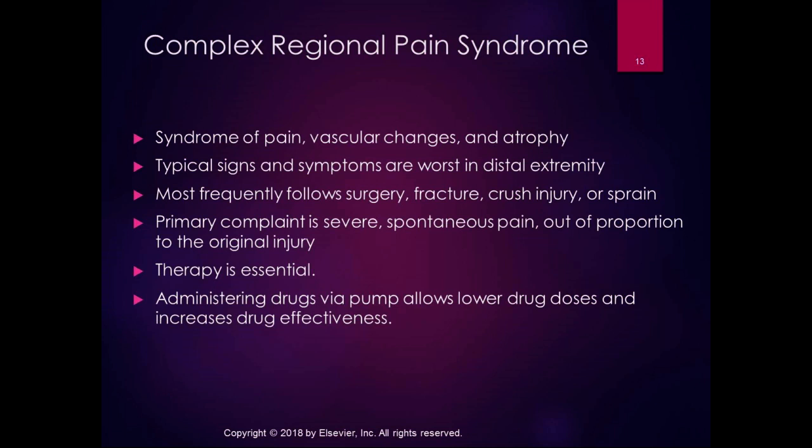Complex regional pain syndrome is a syndrome of pain, vascular changes, and atrophy. The signs and symptoms usually present in a regional distribution, meaning it's not dermatomal, it's not peripheral nerve — it's regional, like an upper limb or a lower limb, rather than a nerve root distribution or a peripheral nerve distribution. The signs and symptoms are usually worst in the distal part of the extremity, so they might affect the entire hand or foot.